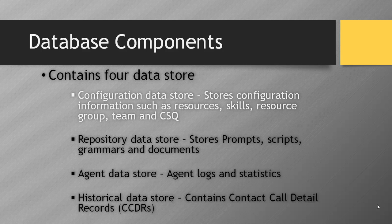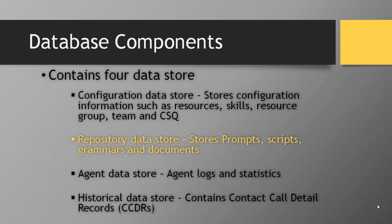The configuration data store includes agent names, recorder names of agents, skills configured in UCCX, different skill levels for agents, resource groups, teams, how many teams are configured, supervisors, and the primary and secondary supervisors for each team, as well as the CSQs — contact service queues.